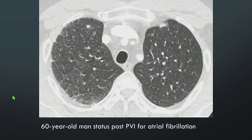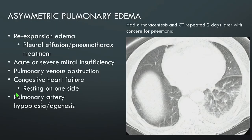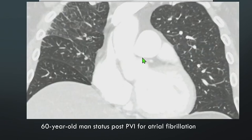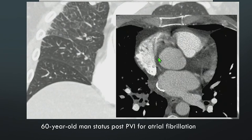We saw a 60-year-old man status post-pulmonary vein isolation for atrial fibrillation. There is subtle smooth interlobular septal thickening, especially in the right upper lobe, with the left lung looking fairly normal on both axial and coronal images. On soft tissue windows, one of the pulmonary veins on the right has been completely stenosed — a rare but dreaded complication of pulmonary vein isolation — causing asymmetric edema on the right.